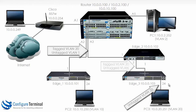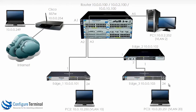So VLAN 20 is going to be tagged across this link and across this link, and then untagged on this link. Firstly let's change the IP address of PC3 to the correct IP address, and then we'll configure edge 3, edge 2, and lastly the router.